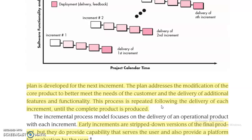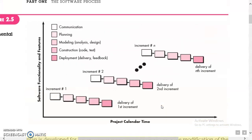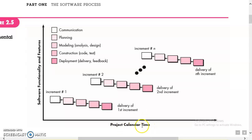We need to modify the core product incrementally. That's why the incremental process model is one of the most important process models. For the project calendar time, software functionality is delivered as one of the increments.